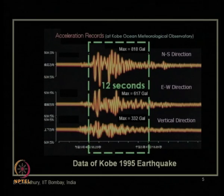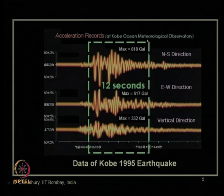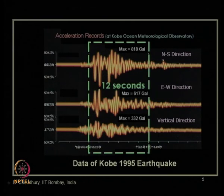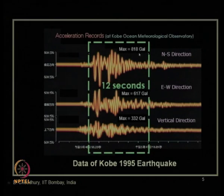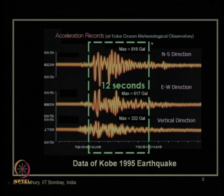We have also studied in the previous lecture about the earthquake data of the 1995 Kobe or Hanshin earthquake. We have seen the acceleration record at the Kobe Ocean Meteorological Observatory, showing horizontal acceleration in the north-south direction, another horizontal acceleration in the east-west direction, and a vertical direction acceleration record. The major earthquake lasted about 12 seconds, with a PGA of 818 gal in the north-south direction, 617 gal in the east-west direction, and 332 gal in the vertical direction.